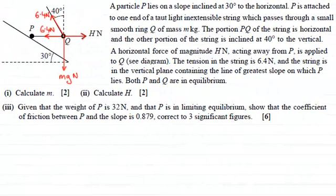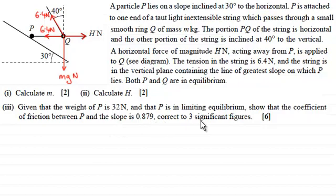In the third part of this question we're given that the weight of P is 32 newtons and that P is in limiting equilibrium. We're going to show that the coefficient of friction between P and the slope is 0.879 correct to three significant figures. If you'd like to have a go at this, pause the video now and come back when you're done to check your solution against mine.